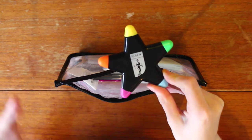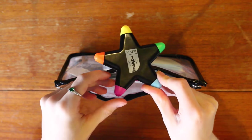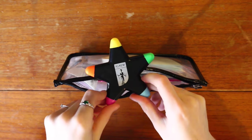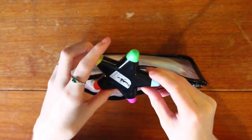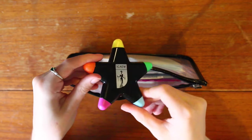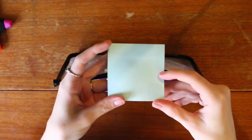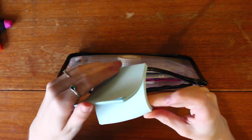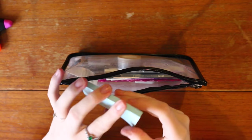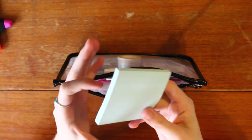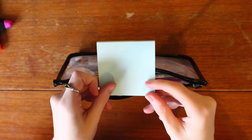Then I have this ACAEW highlighter thing which we got when we went to an event and it's just kind of a star highlighter with one colour highlight on each side. Then I have my favourite sticky notes. They're just these blue ones. I think they're from Poundland possibly and I really like them just for anything that I need to jot down.